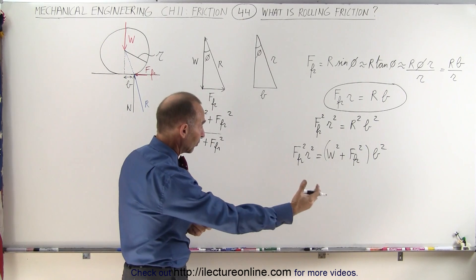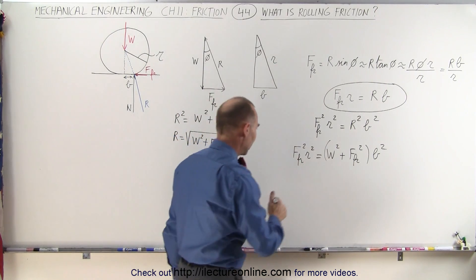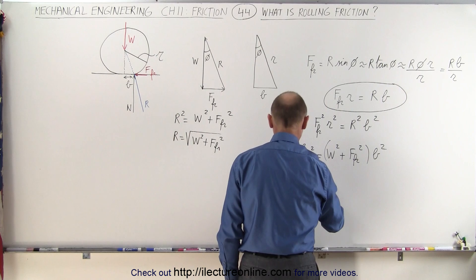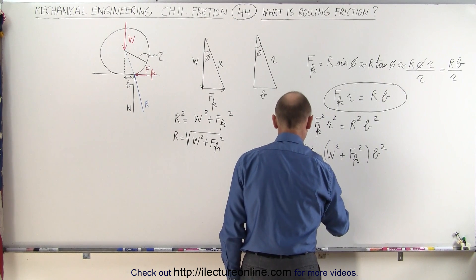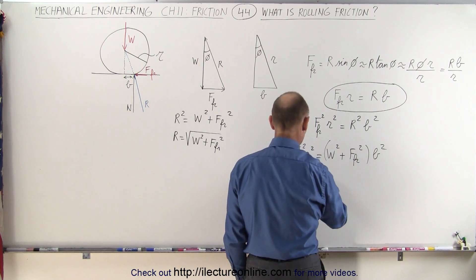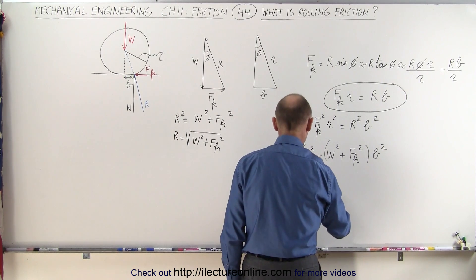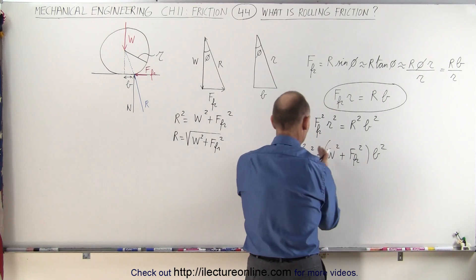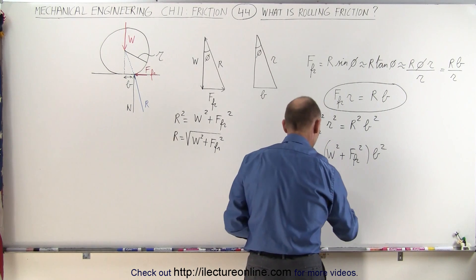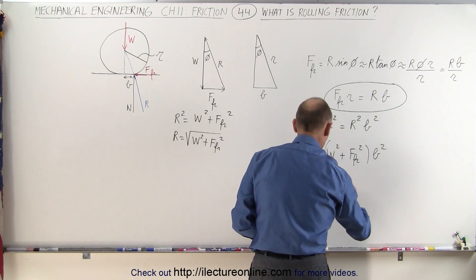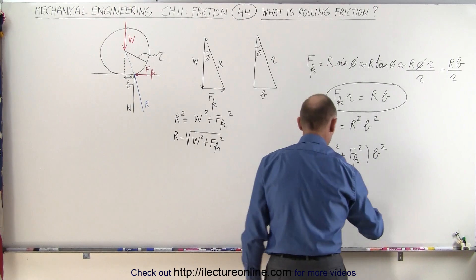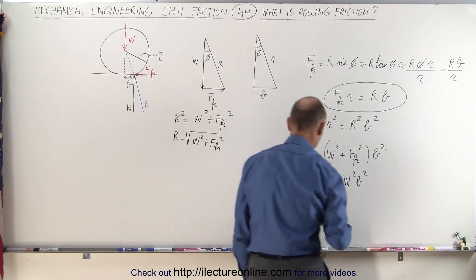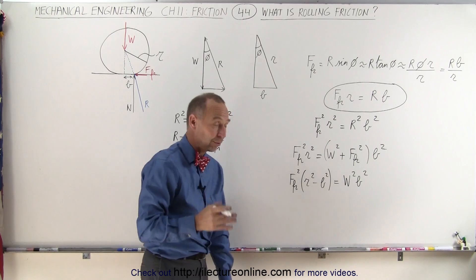Now we want to isolate the friction force squared. Every term with the friction force goes to the left. So we have friction force squared times R squared minus B squared — because when we bring this term across it becomes negative — equal to load squared times B squared.